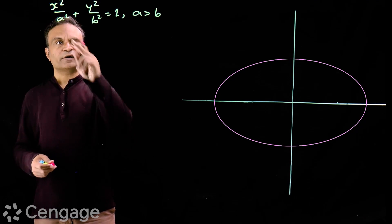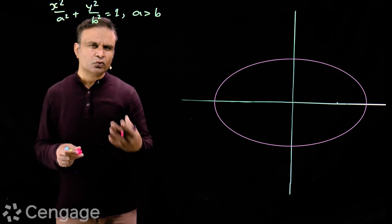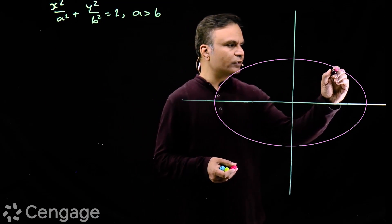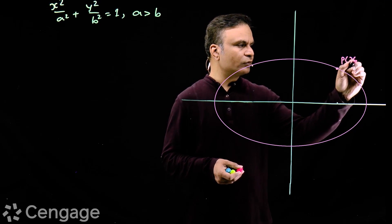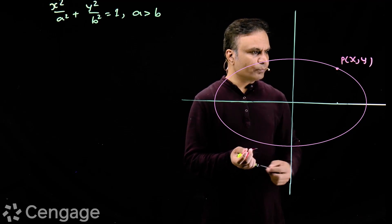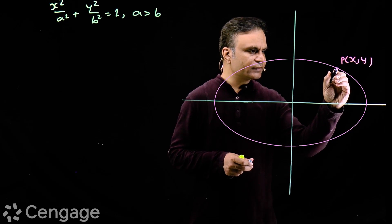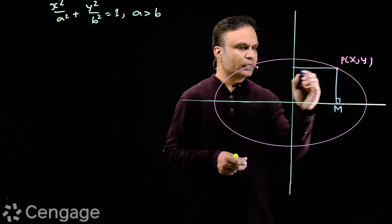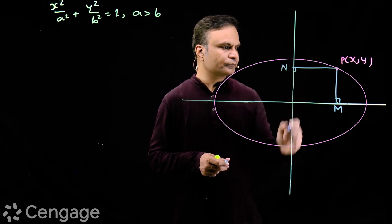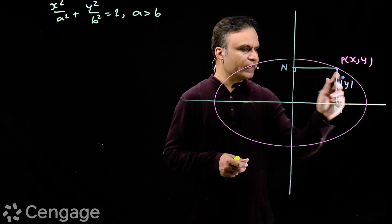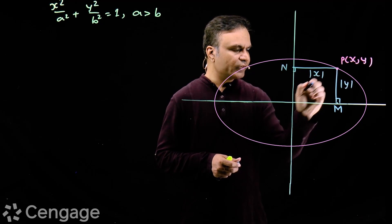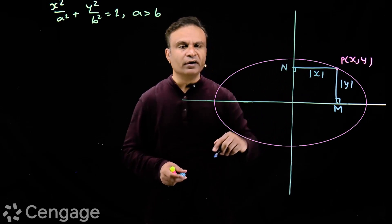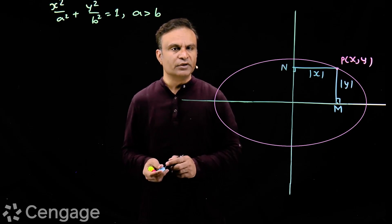But for me, x and y in this equation are more than just coordinates of a variable point on the ellipse. Consider a variable point P on the ellipse having coordinates (x, y). From point P, I drop perpendiculars on the axes of the ellipse — this is point M and this is point N. Distance PM is the modulus of y, and distance PN is the modulus of x. I am using the modulus sign because this point may be in any quadrant on the ellipse, but distances are always positive.